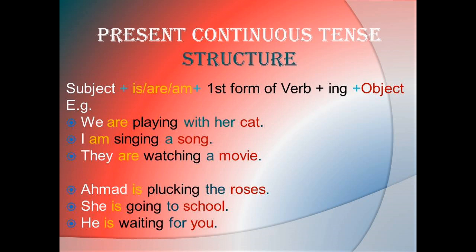For example: We are playing with her cat — here 'are' is the helping verb and 'playing' is first form of verb plus ing. I am singing a song. They are watching a movie. Ahmed is plucking the roses. She is going to school. He is waiting for you. Helping verb 'is' is always used with a singular subject, 'am' is used with only I, and 'are' is used for plural subjects.